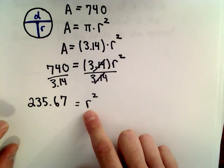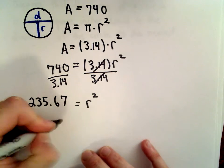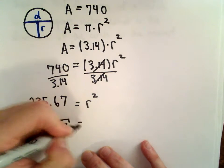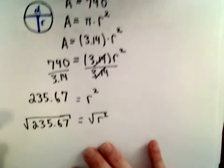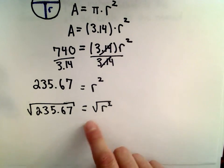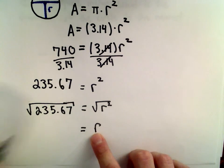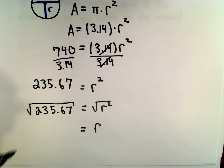And now to get r by itself, since r is being squared, we're going to take the square root of both sides. Now normally for an algebraic equation, when you take the square root of both sides, you have to include a positive and negative on one side of the equation. But in this case, taking the square root of r-squared is going to give us r. The radius clearly has to be positive, so I'm only going to keep the positive solution.